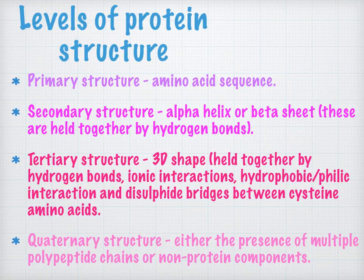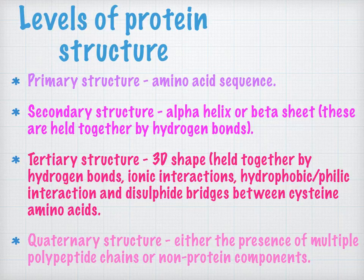Quaternary structure is present in some proteins — either where there are multiple polypeptide chains or non-protein components. A good example is the hemoglobin molecule: it has four different polypeptides, giving it quaternary structure, and it also contains an iron ion at its centre, which is a non-protein component — again giving it quaternary structure.